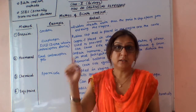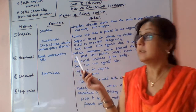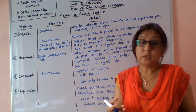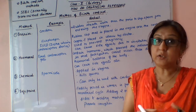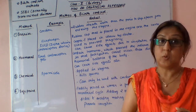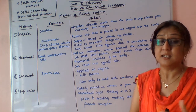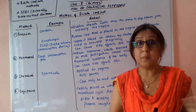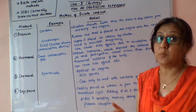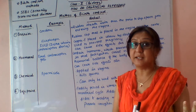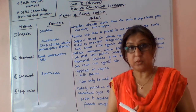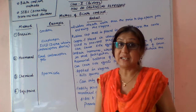Good morning students. Today I will teach you the last topic of this chapter — birth control and STDs. STDs means sexually transmitted diseases. As we know, the population is growing day by day, so it's very important to limit the population. For that, we should take preventive measures or adopt birth control methods. A female's life is much affected by pregnancy, so if she wants to avoid pregnancy, certain birth control methods can be used.